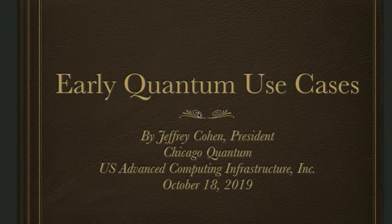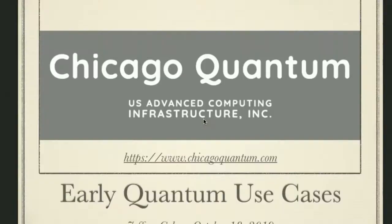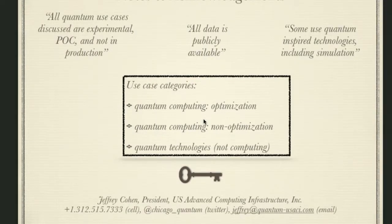Early quantum use cases — this was written October 18th, 2019. Some quick notes: these are all experimental, proof of concept. None of these are in production today, and all the data you're about to hear is publicly available. We have three use case categories: quantum computing for optimization, quantum computing for non-optimization, and different quantum technologies that are not in computing. You can contact us for more information and to help create your own use case.